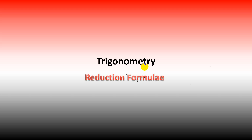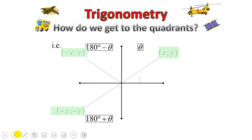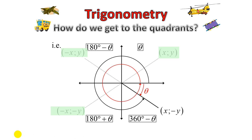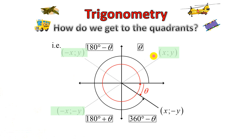In this video we're going to be looking at the reduction formula. The first question I'd like to pose is how do we get to the various quadrants? In the first quadrant we refer to that as an angle called theta. Once we jump into the second quadrant, remember that 90 degrees is there. We start at 0, 90, 180, 270, and we return to 360.